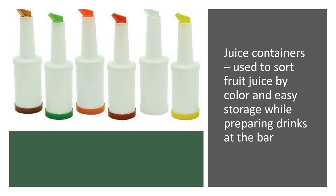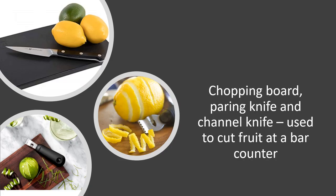For example: green containers hold apple juice, orange holds orange juice, yellow holds pineapple juice, red holds grapefruit, white holds milk, and red holds tomato juice. A chopping board, paring knife, and channel knife are used to cut fruits at a bar counter. A paring knife is mainly used to separate the skin from fruits and vegetables, while a channel knife is used to peel off the skin of fruits and make twist-shape garnishes.